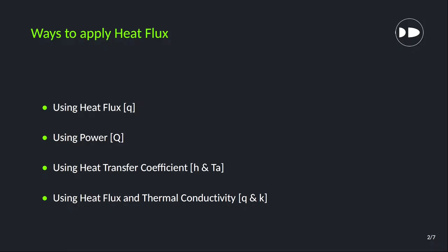We have four different methods of applying a heat flux boundary condition. The first one is using heat flux itself. The second one is using power Q. Third, if we have heat transfer coefficient and ambient temperature we can use those values as input. The fourth one is using heat flux and thermal conductivity. Depending on what input you have, you can use the method accordingly.